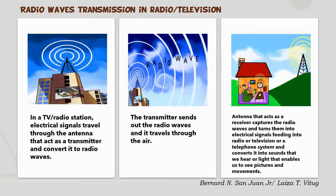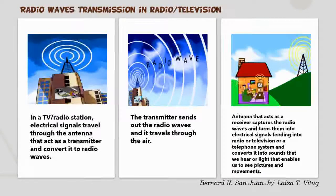That is how radio waves are transmitted in radio or television. The transmission is unidirectional, meaning the electromagnetic waves from the radio station are received only by the receiving antenna coming from a communication system such as radio, television, or telephone.